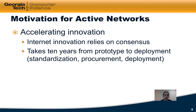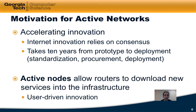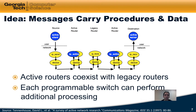Active networks had the same motivation and observed that if you could put active nodes in the network where routers could download new services into the infrastructure, that could allow for user-driven innovation. The main idea is that messages or packets would carry both the data and procedures that might operate on that data. These active routers performing custom operations might coexist with legacy routers that do nothing more than forward traffic, while each programmable switch might perform additional processing in addition to forwarding.